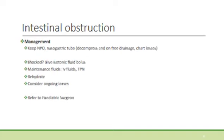When managing a baby with suspected intestinal obstruction, it is important to keep the baby nil by mouth and to insert a nasogastric tube. Decompress the stomach by aspiration and then place it on free drainage, asking the nursing staff to aspirate every three hours to prevent further vomiting. Losses should be carefully charted to help with intake and output calculations.